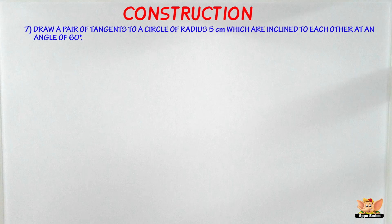In this video let us solve another problem based on the construction of tangents to a circle from an external point when its center is known. The question is: Draw a pair of tangents to a circle of radius 5 centimeters which are inclined to each other at an angle of 60 degrees.